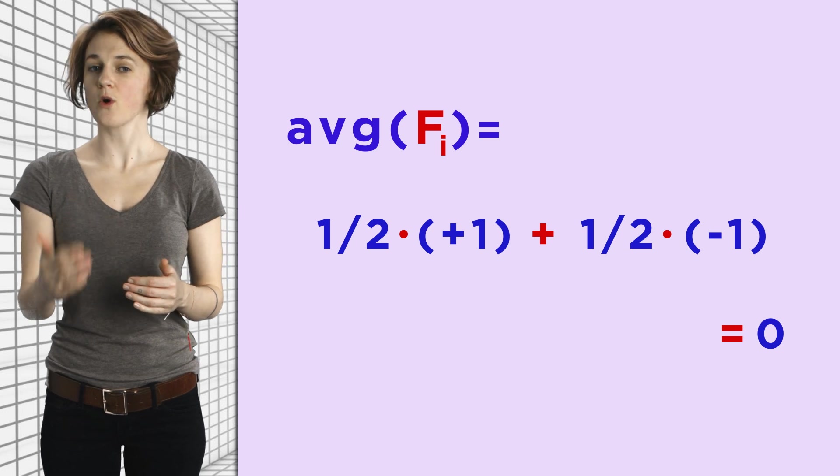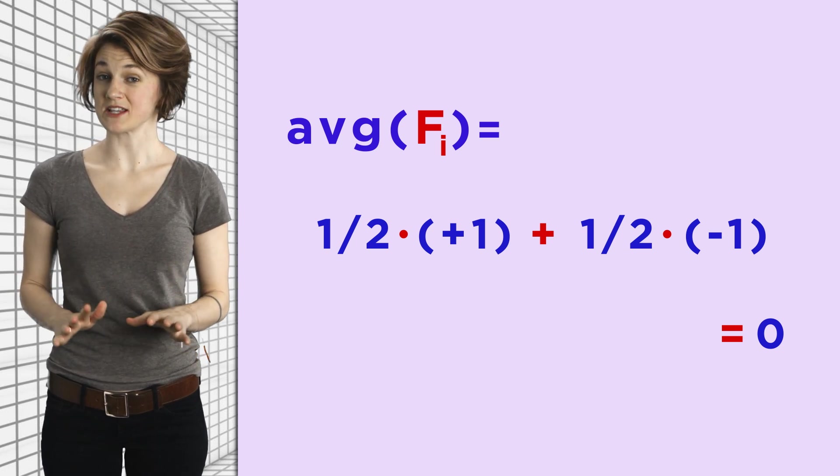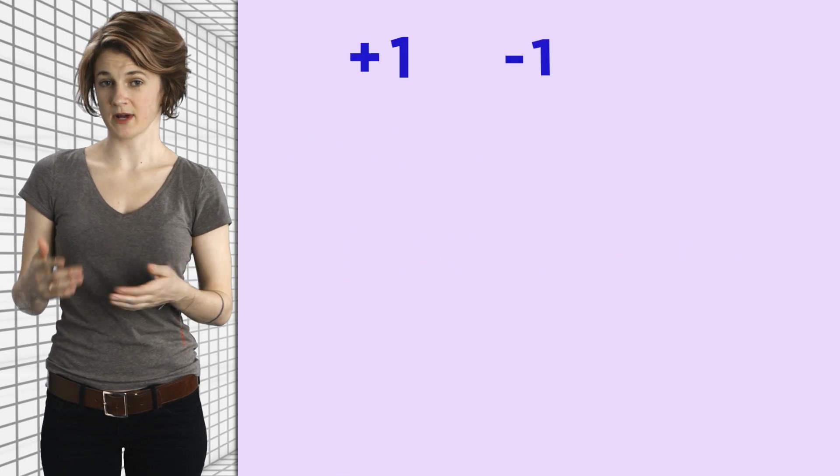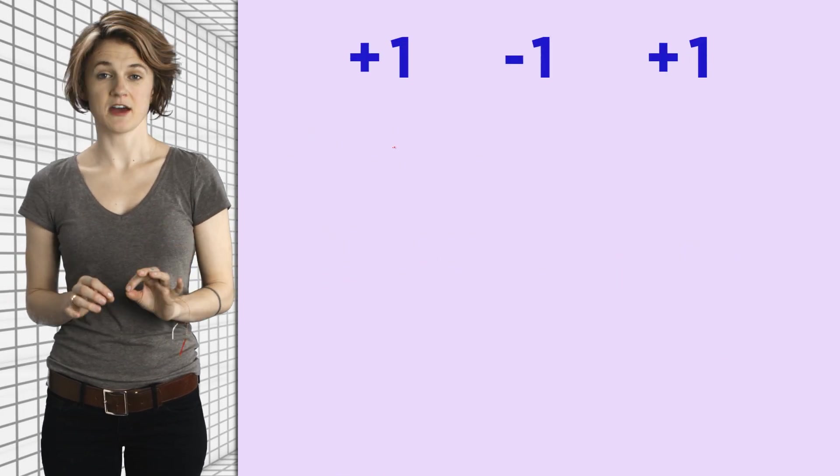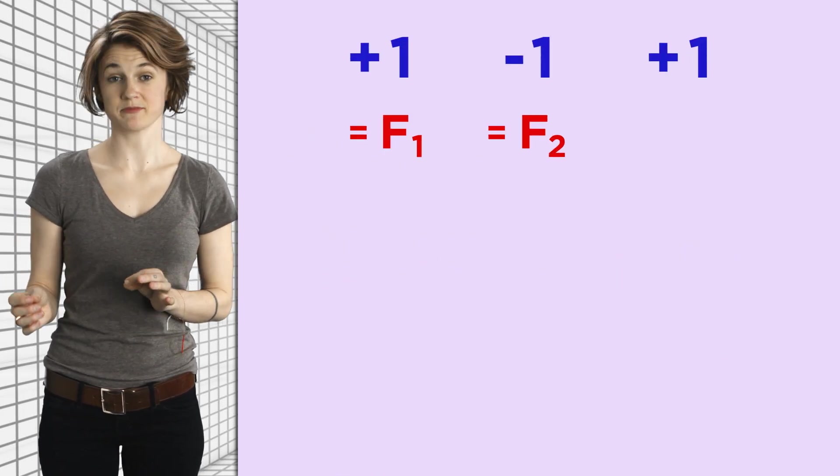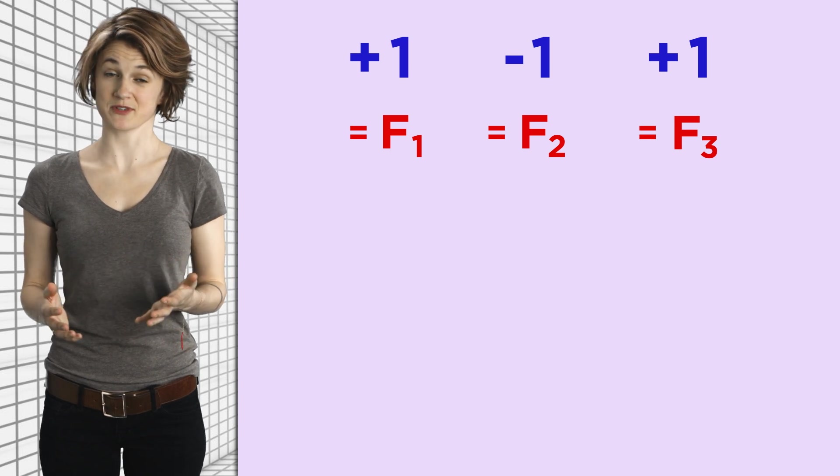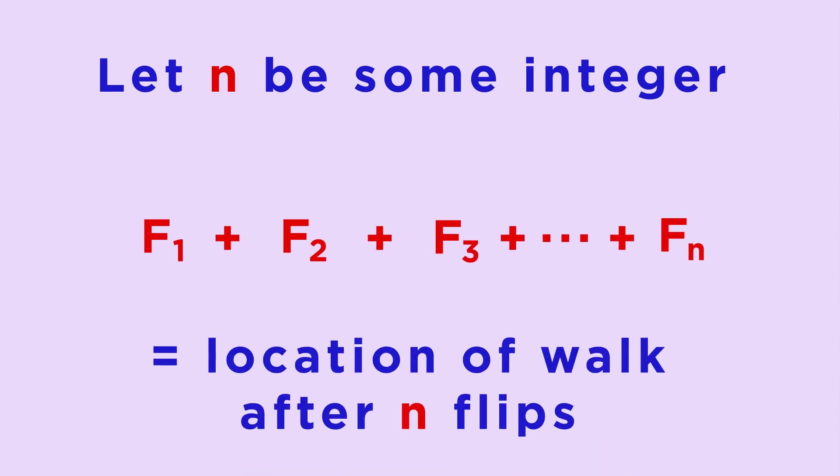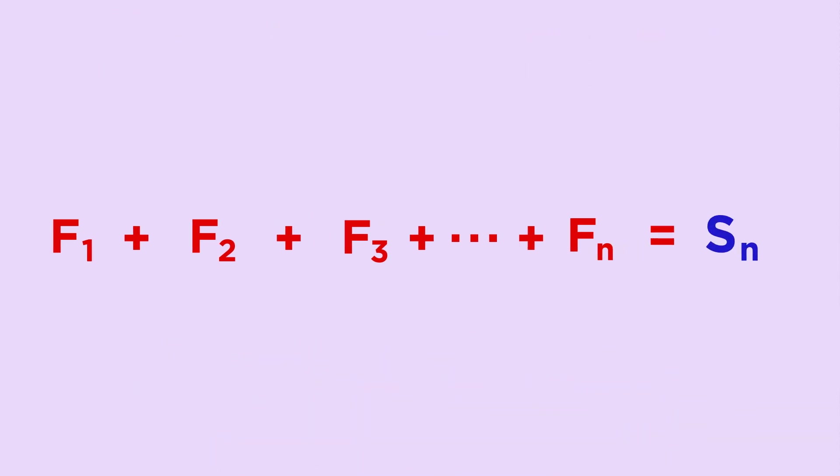After we actually flip the coin, the F_i have specific values. So if your first three flips are plus 1, minus 1, plus 1, then F_1 equals plus 1, F_2 equals minus 1, and F_3 equals plus 1. Let n be some integer. If we add F_1 plus F_2 plus F_3 all the way up to F_n together, we get the location of the walk after n flips. Let's call that S_n. So S_n, the sum of the coin flips, is also a random variable.